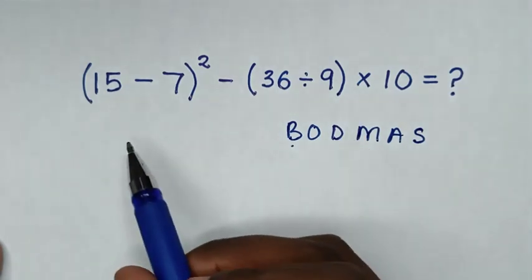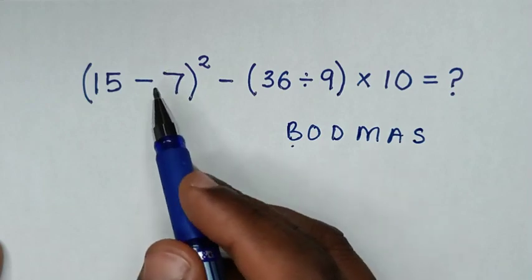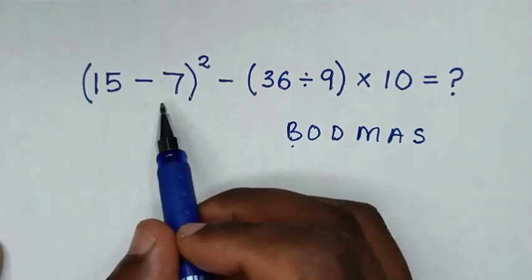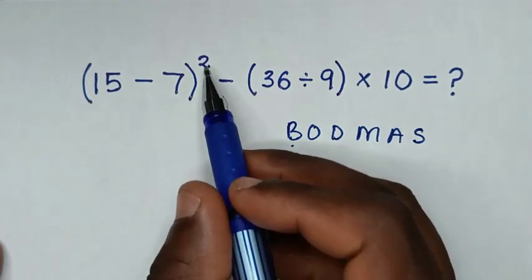So we start to deal with the first operation inside this first bracket. From this first bracket there's 15 minus 7 which is 8. So it will be 8 squared.